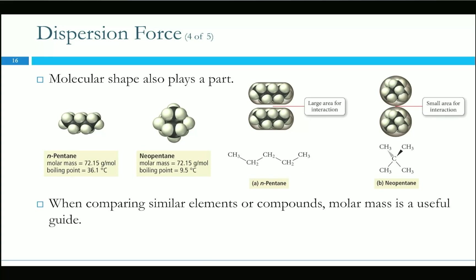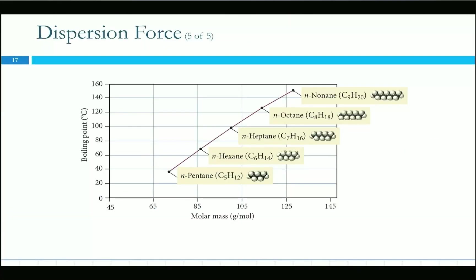In general, you can compare things by molar mass first, then by shape if necessary. As you increase the length of an alkane chain, you also increase the area where electrons can be polarized, giving stronger intermolecular forces. Odd and even-numbered alkanes have different melting points because they stack together differently, but for boiling points, increasing chain length increases intermolecular forces.